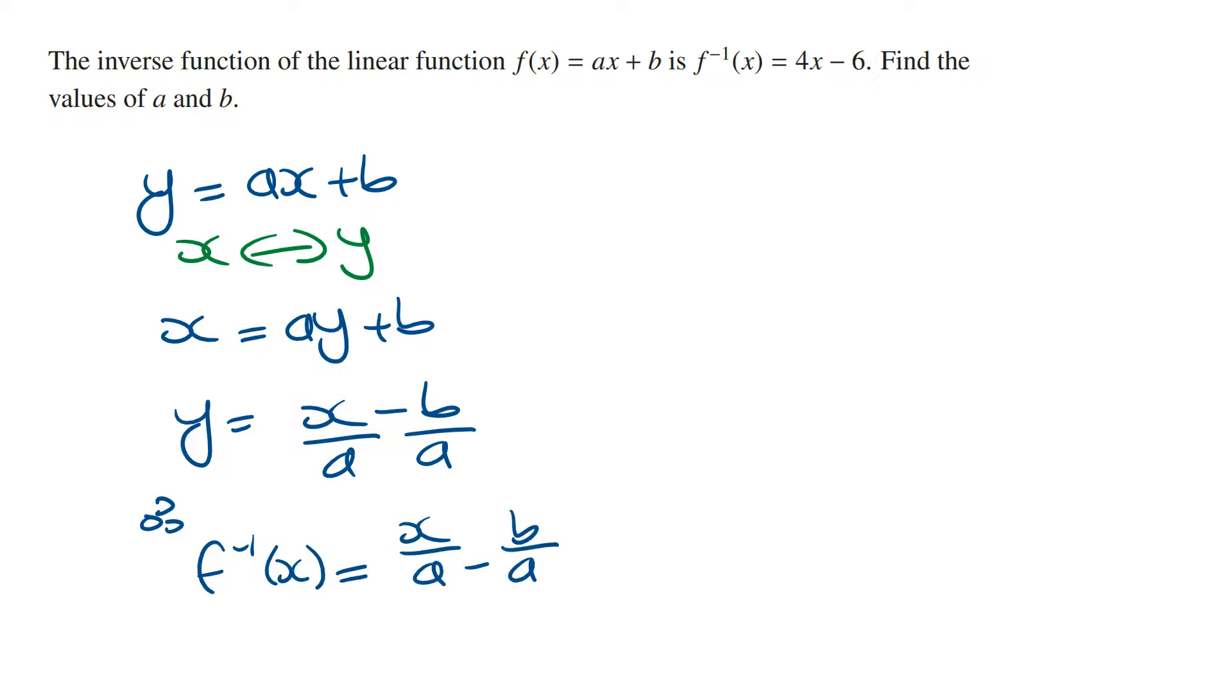Now we're told that f inverse of x equals 4x minus 6. And so this means that 1/a, the coefficient of the x term, is going to equal 4. And b/a, which is the constant, is going to equal 6.